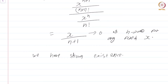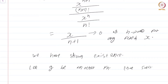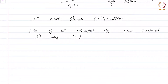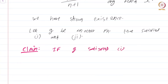What about uniqueness? Let g be another function that satisfies properties 1 and 2. We have to show that f = g. First, we will show that any function satisfying 1 and 2 is never 0. Claim: if g satisfies 1 and 2, then g(x) ≠ 0 for all x in ℝ.